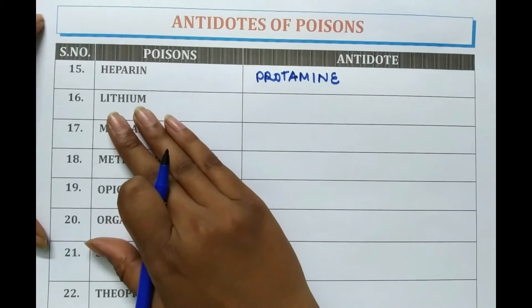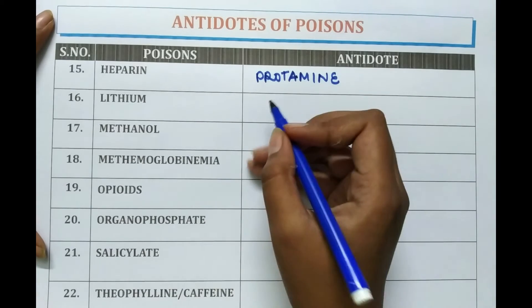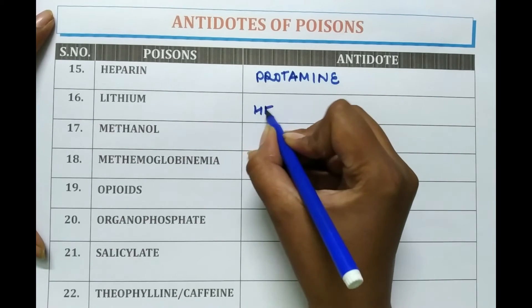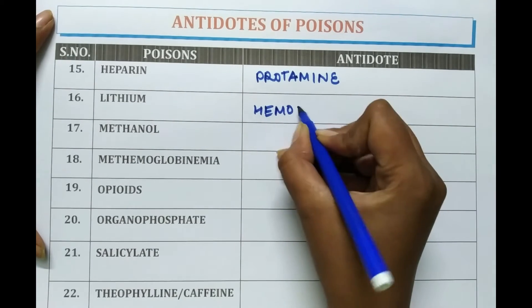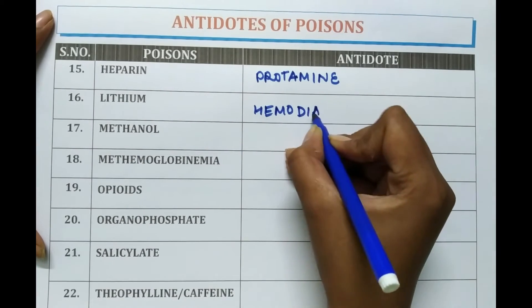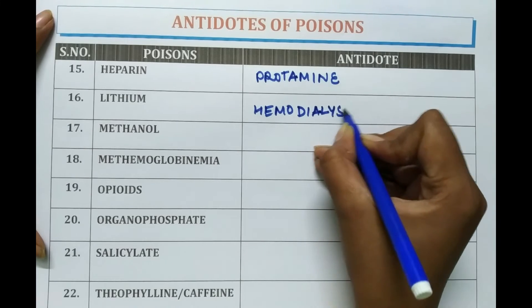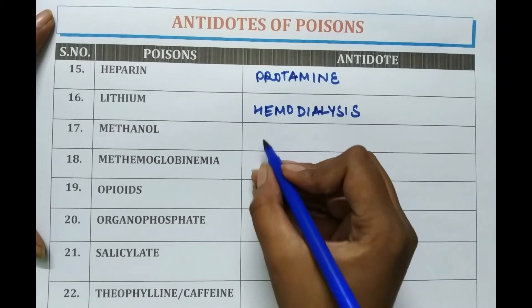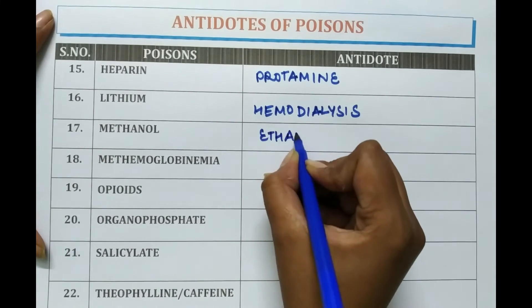In case of lithium poisoning, haemodialysis is done. In case of methanol poisoning, ethanol is given as the antidote.